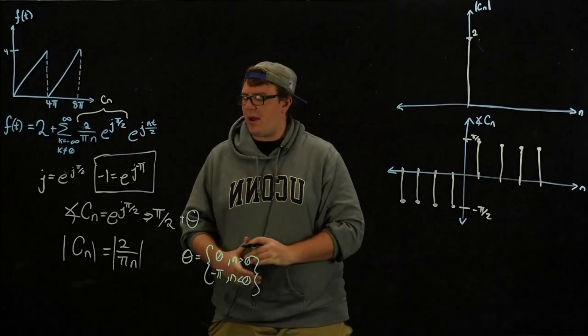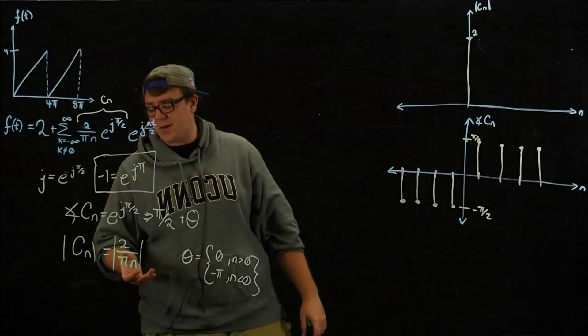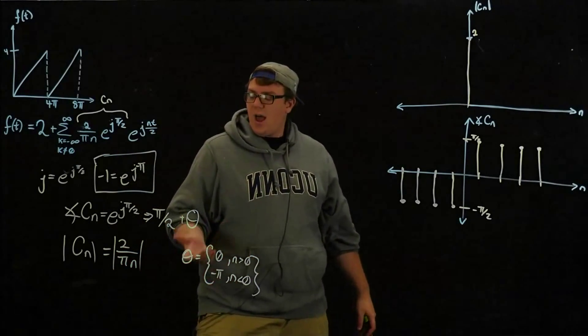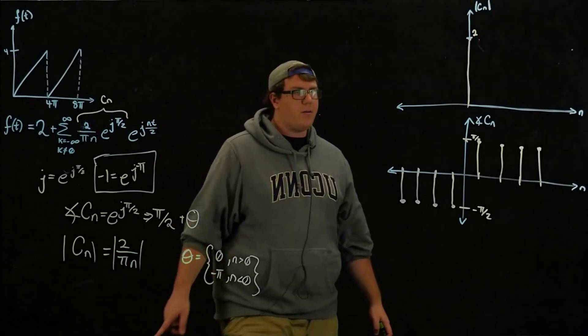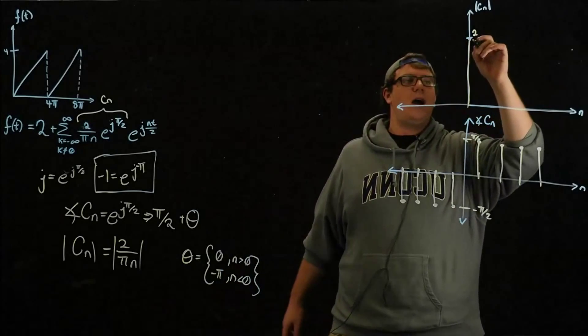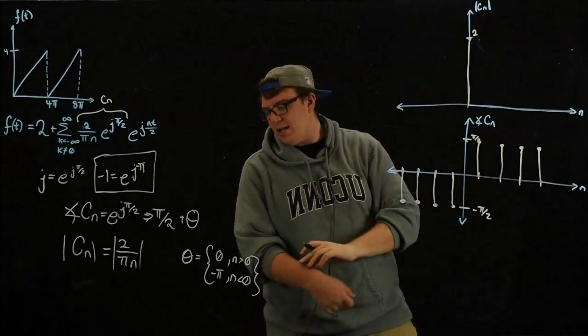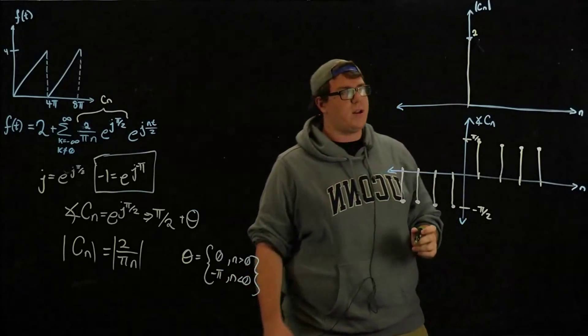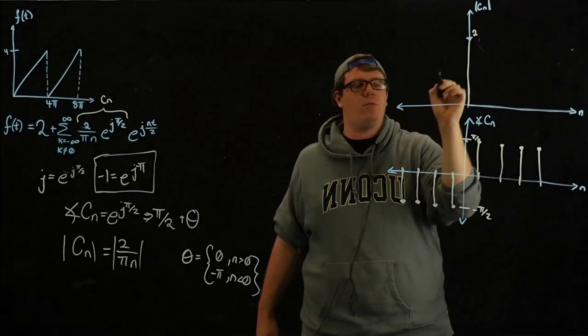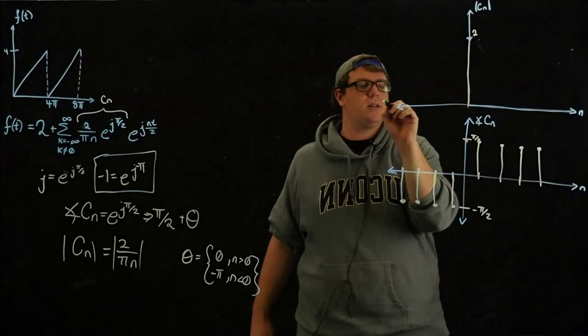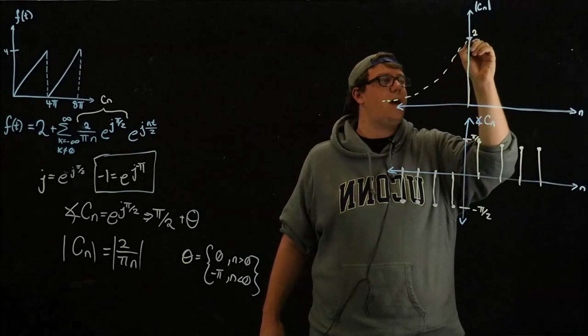Now, we can talk about the magnitude plot very quickly. And so it's the magnitude of 2 pi over N. So we know it starts at 2, and then it follows at 2 pi over N. So what's going to happen there is we find that it's going to do a kind of 1 over N thing on both sides. So it's going to do something like that.